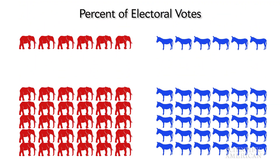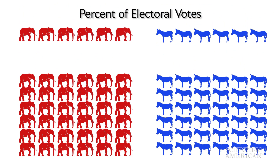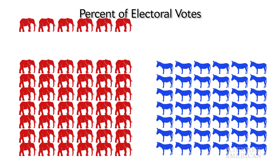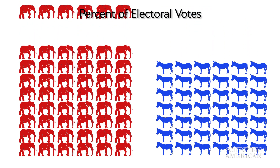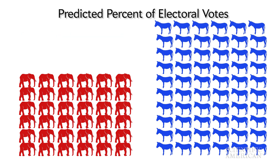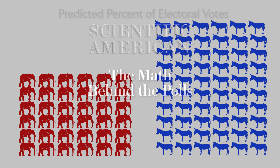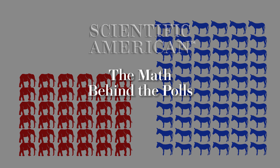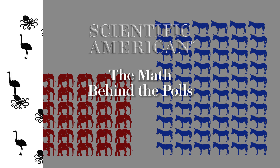In the 2016 U.S. presidential election, the results looked something like this, which surprised many people, as pre-election polls had predicted it would go a little more like that. Experts are analyzing what happened, but for now, here's some of the math that underpins polling.